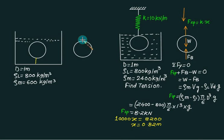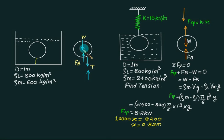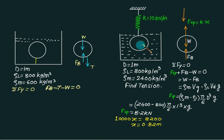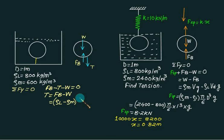Weight acts vertically downward, buoyant force acts vertically upward, and tension acts inward (downward). Applying sigma F = 0 for the FBD above the sphere: buoyant force is positive, tension is negative, weight is negative. So T = buoyant force − W = (ρ_liquid − ρ_material) × (π/6)d³ × g. Substituting all values gives tension T ≈ 1.027 kN.